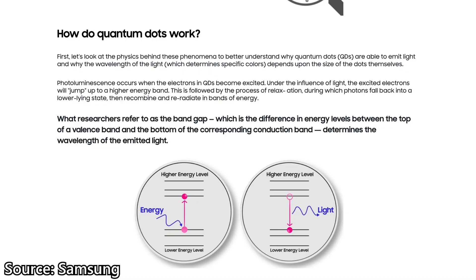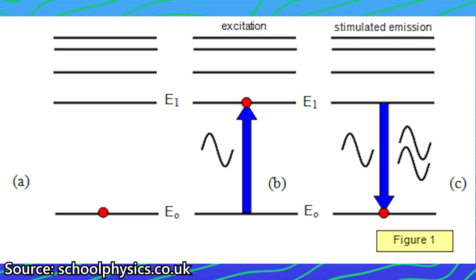Then I continued to explain how Quantum Dots work. It needs an external light source to excite its electrons to a higher energy level, reaching a metastable state. Then that electron will drop back down to a more stable state, and to lose that energy it emits a photon — light at a particular frequency. In a way, it is similar to a laser, but they are used for different purposes.